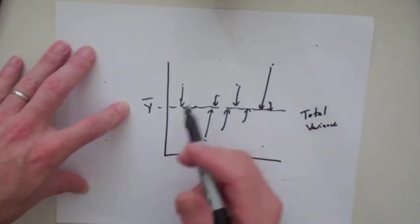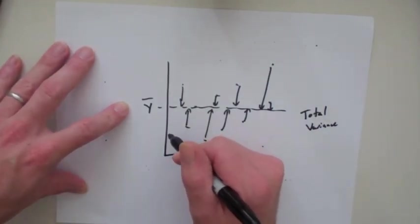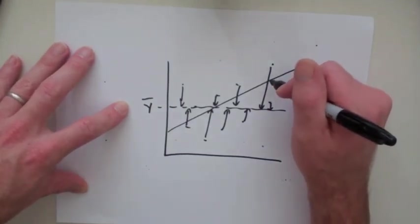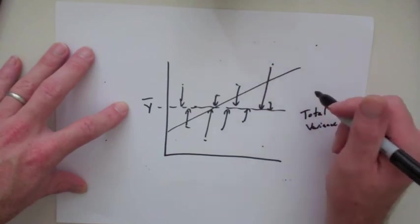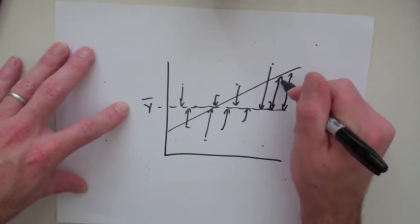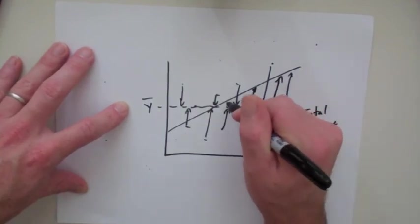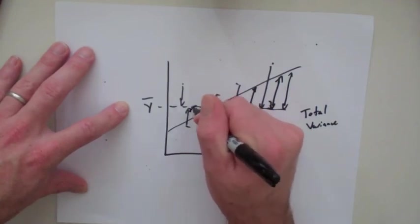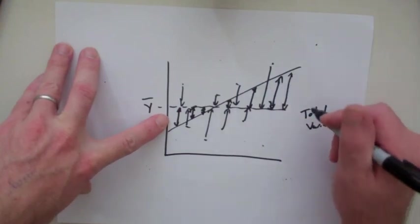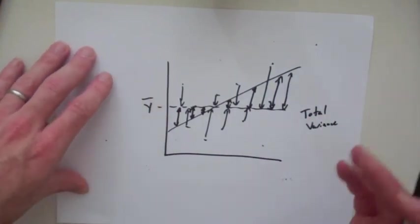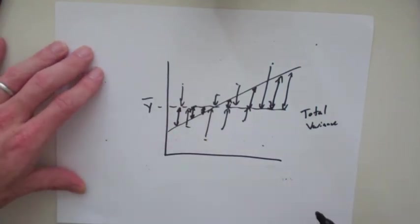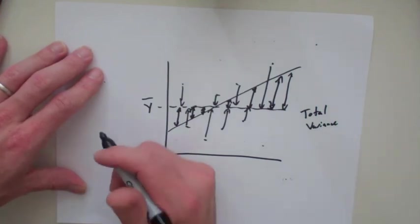We can also then fit a line through these points and then measure the distance between each point, excuse me, the line. This is the slope again. This is the variance that is explained by the line. So r-squared is all the variance and then when you just look at the variance explained by the line you get the ratio or the proportion of all of the variance that is explained by the line.